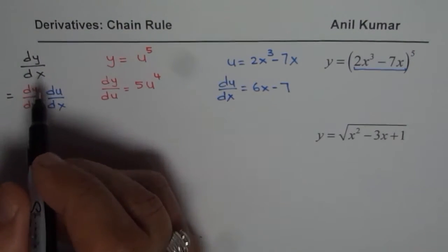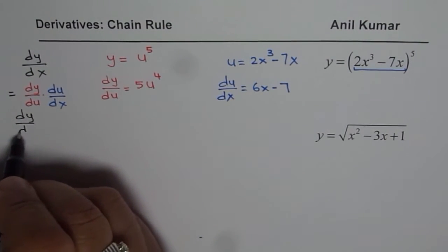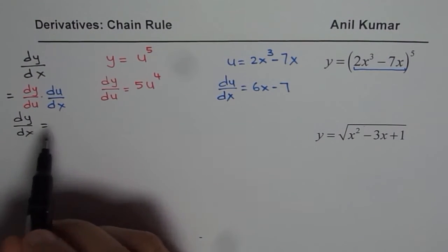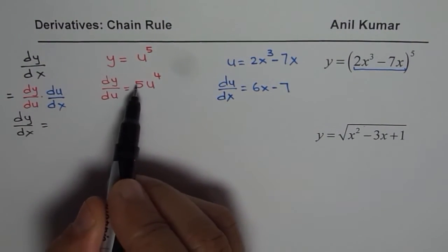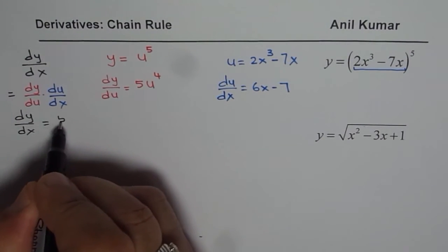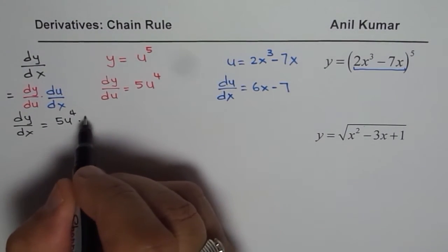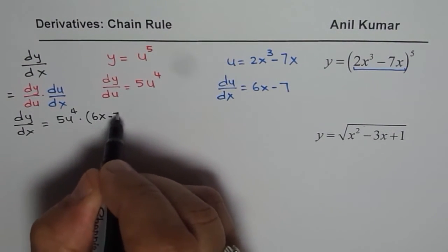Let me write down again what dy/dx or derivative of this composite function can be. It is dy/du, which is 5u⁴, times du/dx, which is 6x - 7.